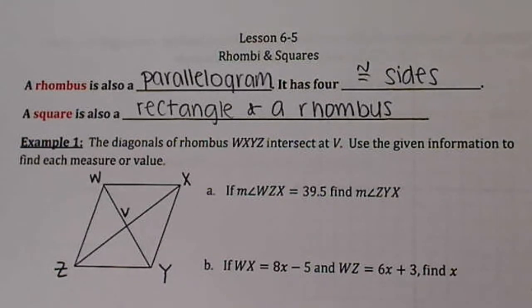A rhombus, you need to know, is also a parallelogram, which means that any conditions that are met for a parallelogram are also met for a rhombus. But there is an additional condition in that it has four congruent sides. So think about a slanted square.